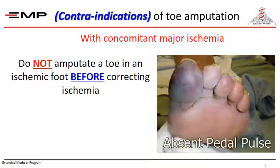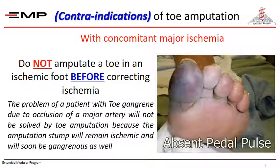You should not attempt amputation of an ischemic or gangrenous toe in an ischemic limb before correcting ischemia. The problem of a patient with toe gangrene due to occlusion of a major artery will not be solved by toe amputation, because the amputation stump will remain ischemic and will soon become gangrenous as well. However, if the gangrenous toe in an ischemic foot is associated with deep infection that needs drainage, you can remove the toe as part of drainage, which should be followed by prompt revascularization.